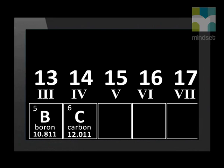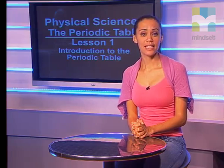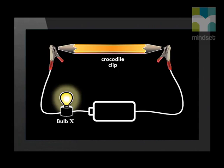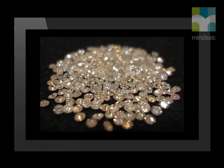The next element is carbon. It has atomic number 6 and its symbol is capital C. Carbon is a very special element — it is the only non-metal that can conduct electricity. Here we see pencil lead, which is actually carbon used in an electric circuit. This form of carbon is called graphite. If carbon is put under lots of pressure at a high temperature, it arranges itself differently and forms diamonds.